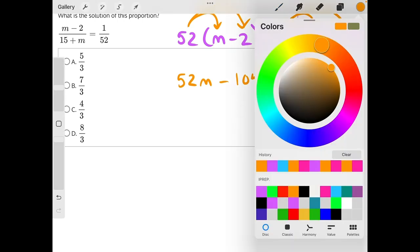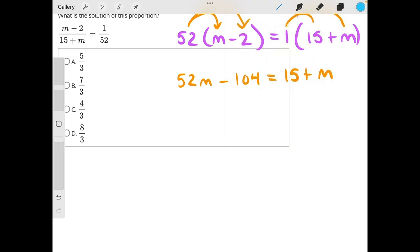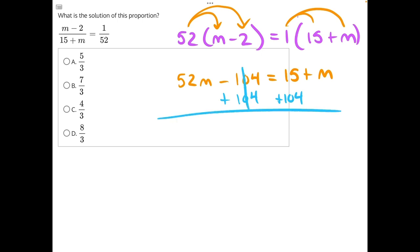Now we can use opposite operations to combine like terms. We have 104 being subtracted from 52m, so the opposite operation is adding it to both sides. These will cancel, giving us 52m is equal to 15 plus 104, which would give us 5 plus 4 is 9, 1 plus 0 is 1, and then we'd have 1 left over. So we have 119 plus m.